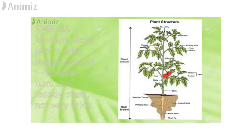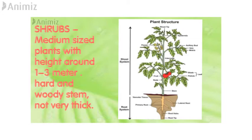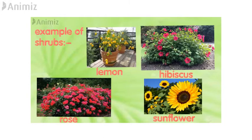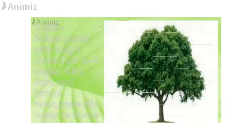Shrubs are medium sized plants with height around 1 to 3 meters. They have hard and woody stem and are not very thick. Examples of shrubs are lemon, hibiscus, rose and sunflower.